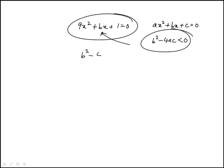B is B, A is 9, and C is 1. So we get B² - 4(9)(1) < 0, which means B² < 36.